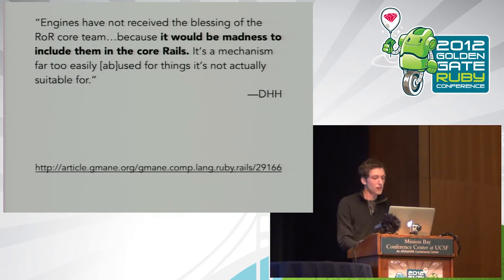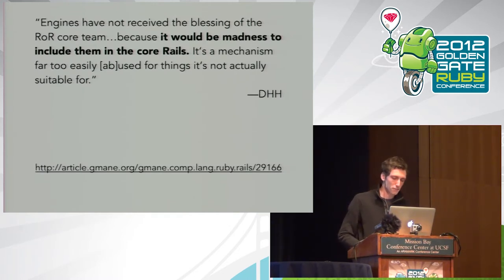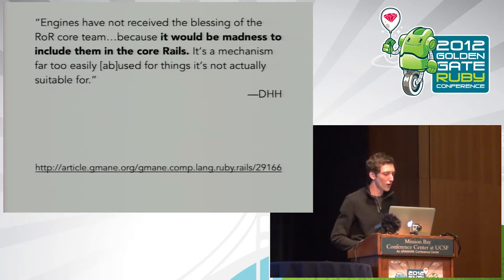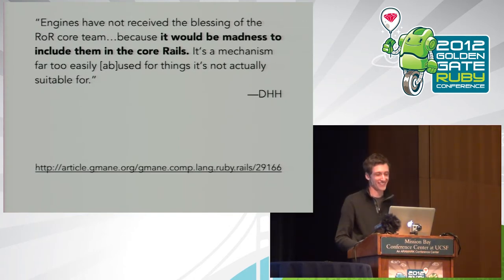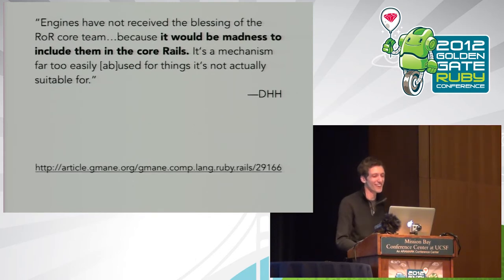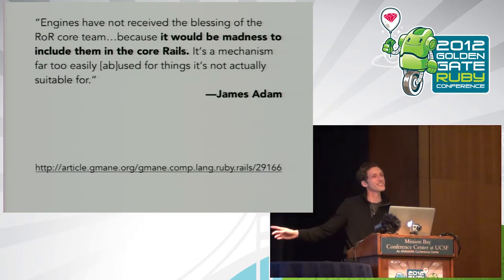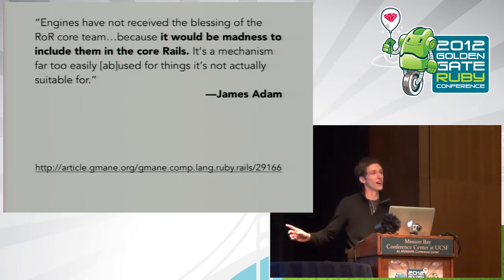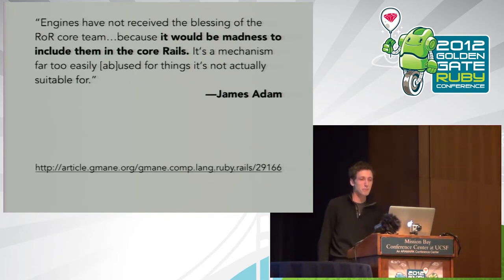Another quote, this time on the Rails mailing list shortly after: "Engines have not received the blessing of the ROR core team because it would be madness to include them in Rails core." You might think that's a classic DHH quote — but no, this is actually James Adam, the creator of Rails engine, saying it would be madness to introduce them into Rails core.